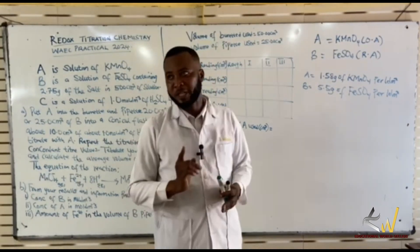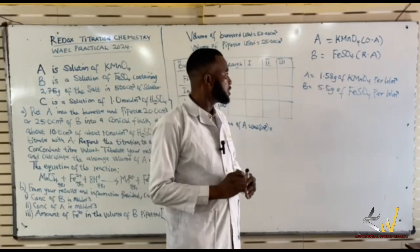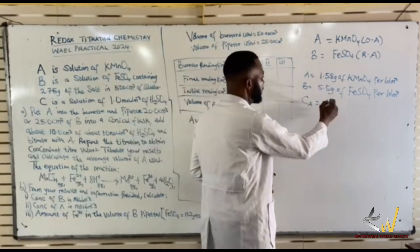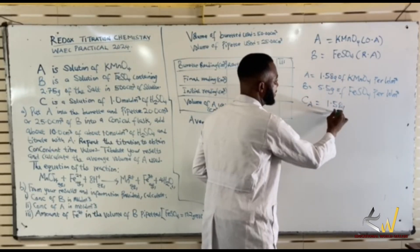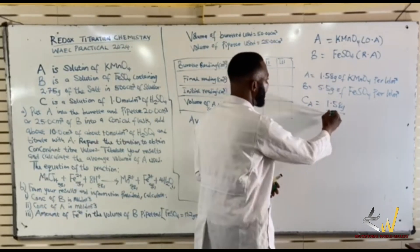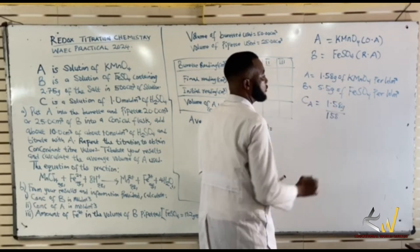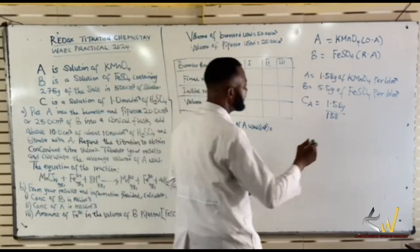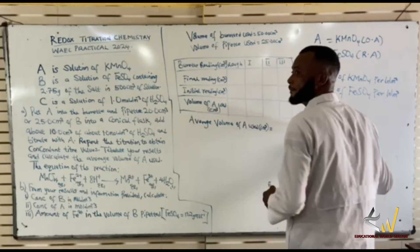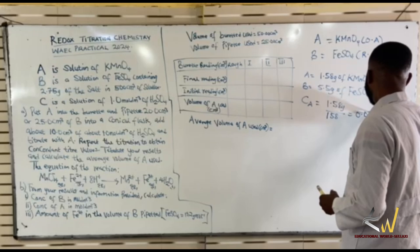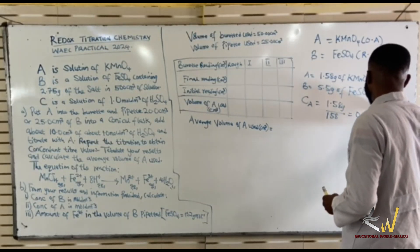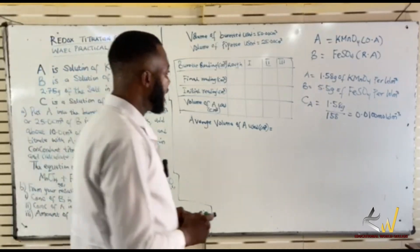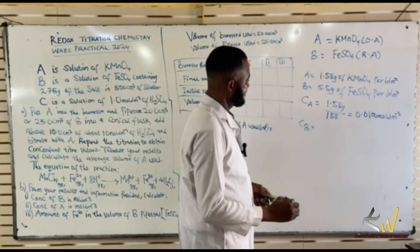This is very simple. I can calculate the concentration of A, which is potassium permanganate. Calculating concentration using my paperwork: 1.58 grams divided by the molar mass of KMnO4, which is 158 g/mol, gives us 0.0100 mol/dm³.